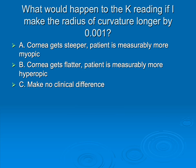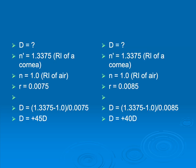So what would happen to the K reading if I made the radius of curvature a little bit longer, not a whole lot, what do you think is going to happen here? Look at these choices. Well, let's find out. We've changed the radius of curvature from 0.0075 to 0.0085, and you can see the effect on the K reading, it became flatter, and that should make sense to you. If you were, let's say, walking along a bowling ball, it would be fairly steep, but if you had something with a much larger radius of curvature, like the earth, it would be much flatter.